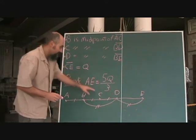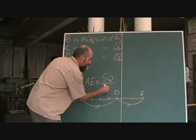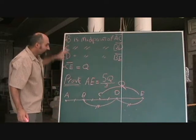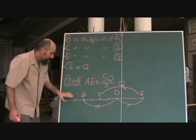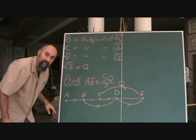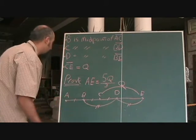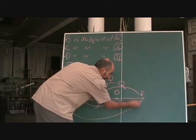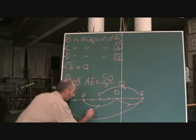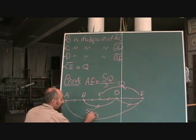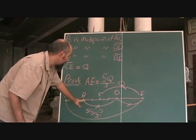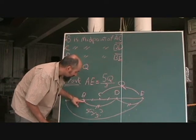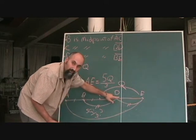The next piece of information given is CE equals Q. We mark that on the diagram. Now we've transferred the whole problem into visual form. Step back and look at what we need to prove: AE equals 5Q over 3. We have to start from the pieces of information we've established. We know some segments are equal, but we need to figure out what each one equals in terms of Q.